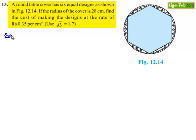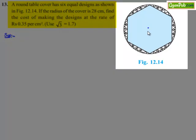Moving on to the solution, let us consider the round table in which the designs are made with the exemption of the hexagon at the center. It is in the form of a circle. Let O be the center of the circle and A, B, C, D, E, F be the edge points of the central hexagonal design.